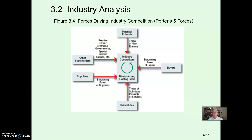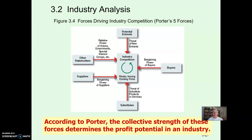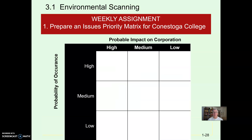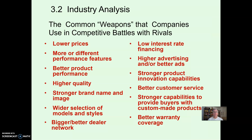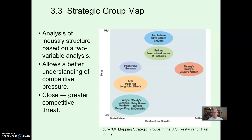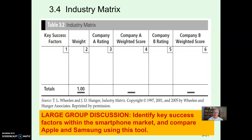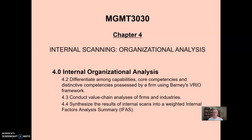As part of that task environment, Michael Porter suggested there were a number of forces driving industry, and we went through the five forces model. Porter says the collective strength of those various forces determines the profit potential in an industry. We also looked at an issues priority matrix — a simple way for an organization to determine which issues to concentrate on. We walked through the weapons companies use in competitive battles, reviewed positioning maps, and saw that companies often cluster together into strategic groups. We then created an industry matrix before moving on to internal scanning.